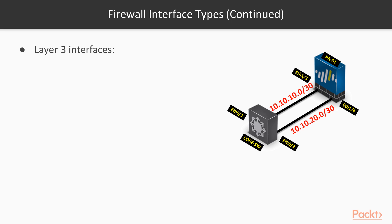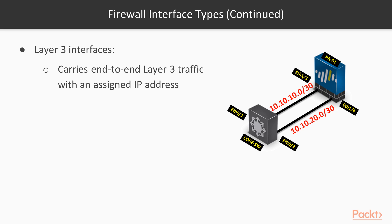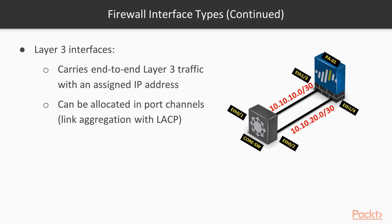Layer three interfaces — this will be the most common deployment. You assign an IP address to the interface, or like the layer two example, you can make it a layer three interface without an IP and create sub-interfaces for each VLAN on a trunk. This is one of my favorite approaches. For example, with a port channel across two switches for redundancy, build a layer three port channel and create sub-interfaces with specific IP addresses per network.